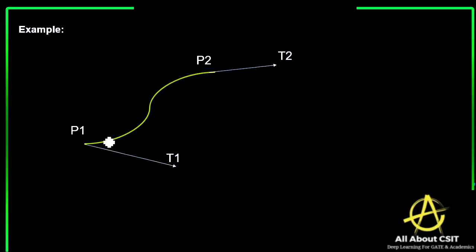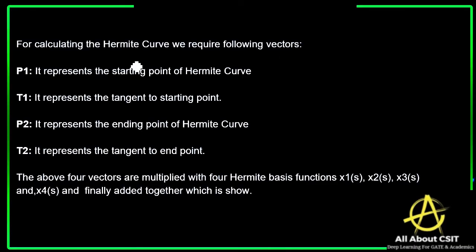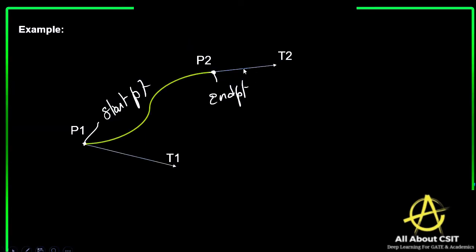In this diagram, P1 is the start point and P2 is the end point, and these are the start point tangent and end point tangent. For calculating the Hermite curves, we require the following vectors: P1, T1, P2, and T2.